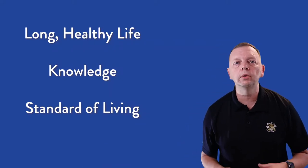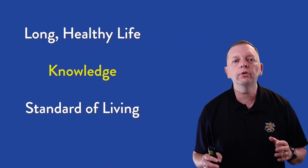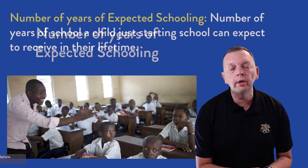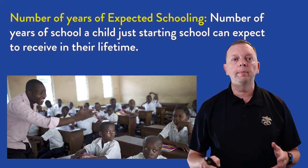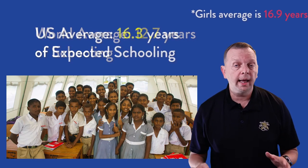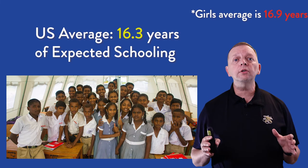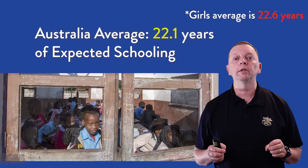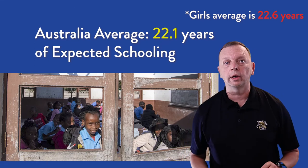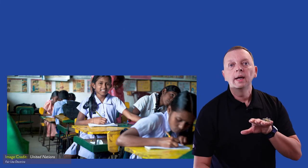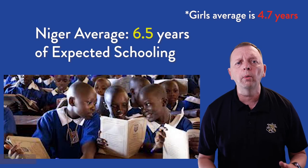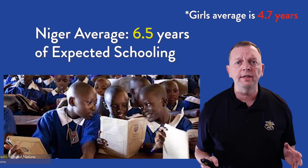The second indicator used by the UN to determine its HDI is knowledge, and there are two demographics looked at. The first is the number of years of schooling that a child getting ready to enter school is expected to receive in her lifetime. The world average is just under 13 years. The United States averages almost 17 years, but the highest in the world is Australia at just shy of 23 years — from elementary school at age six to being about 28 years old in college. Way at the bottom is the African country of Niger, where students begin elementary school at age seven but will generally only have about five years of schooling.